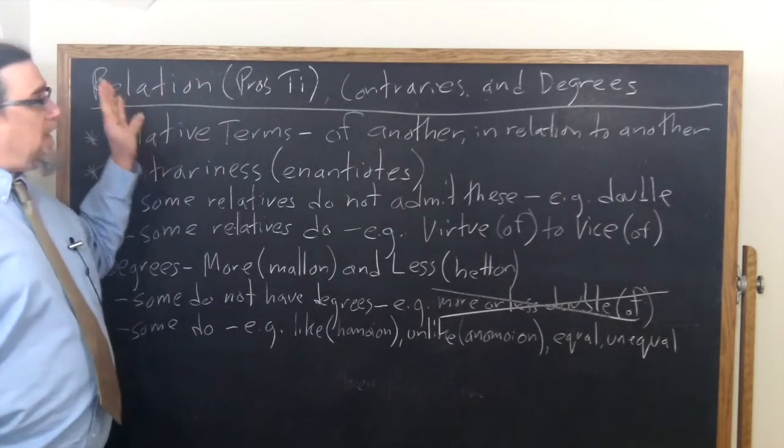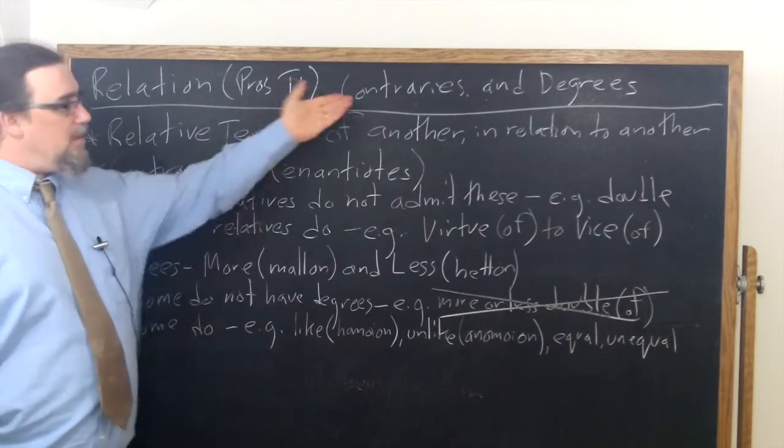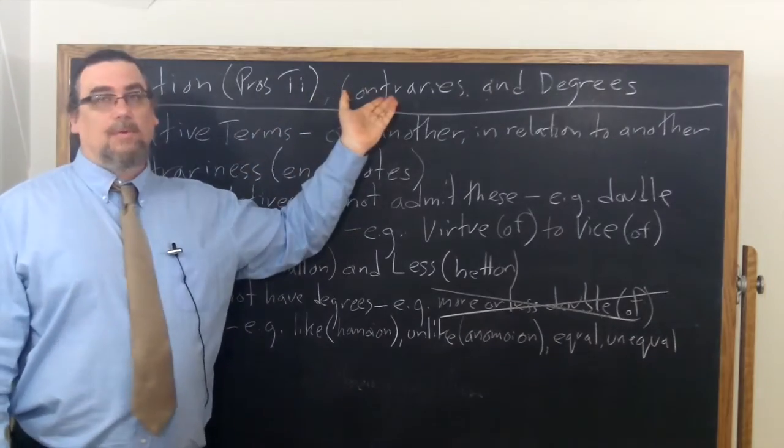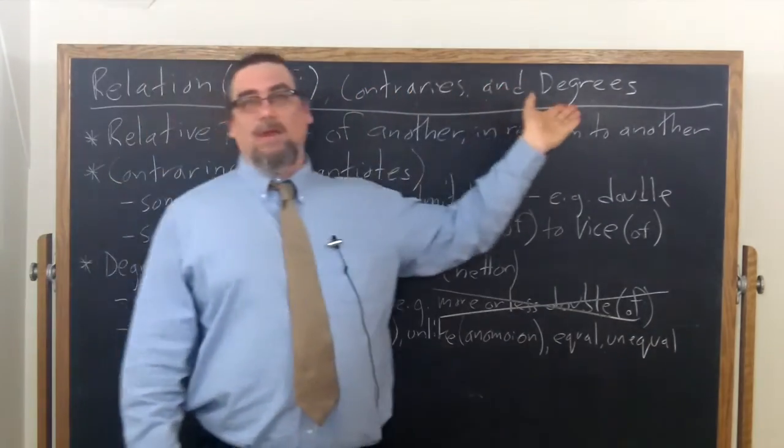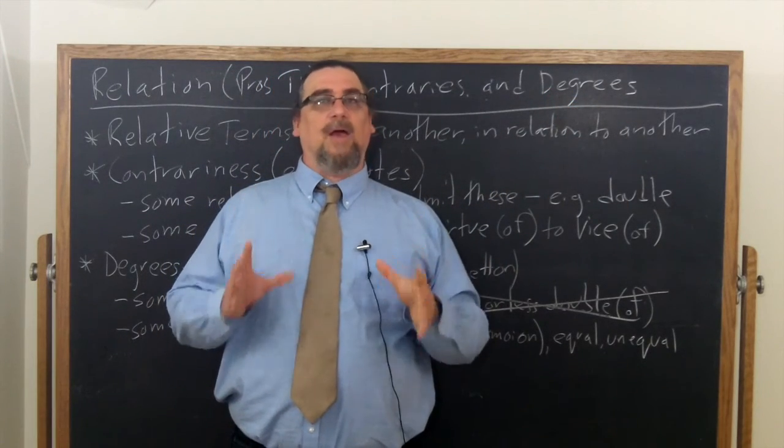So now you notice, this is very interesting. Some relational terms admit of contraries, some don't. Some admit of degrees, and some don't. So you have to look at it on a case by case basis.